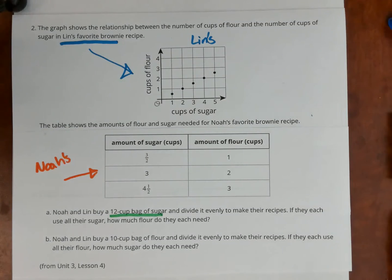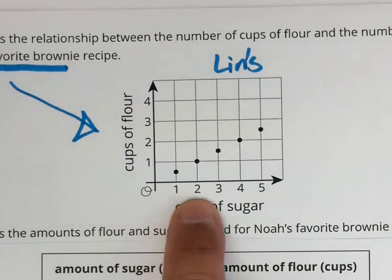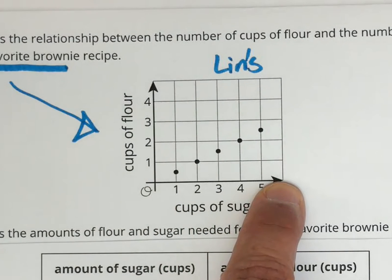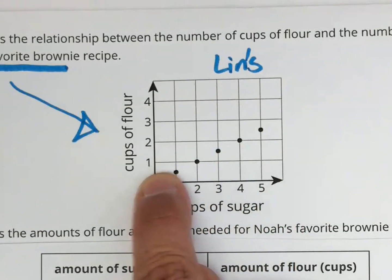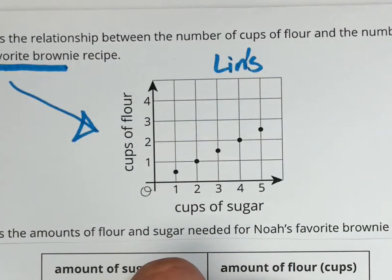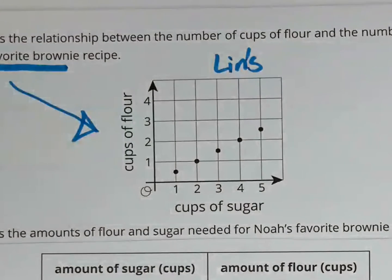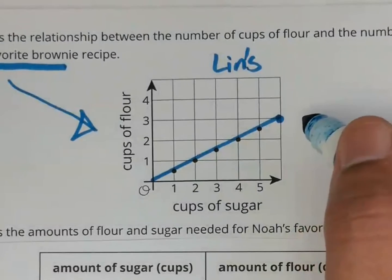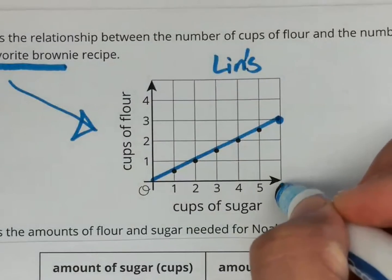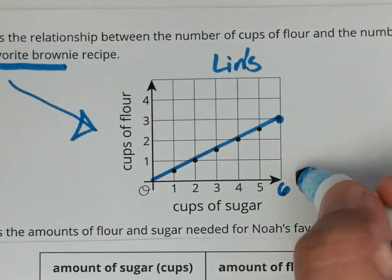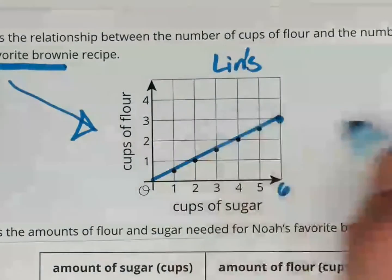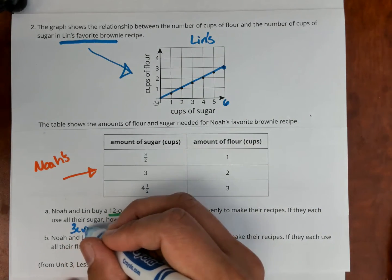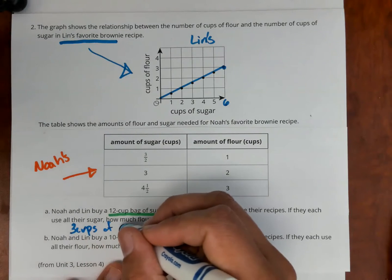Now for each of them, look here in Lynn's graph. This axis goes by ones, one, two, three, four, five. Where would the next one be here? That would be six. And you see how all these points all line up, you can use the graph to see where Lynn's cups of flour will be at six cups of sugar. So there's the line for Lynn's graph. And you see here, that's six cups of sugar. Where is that going to be? How many cups of flour? It's going to be right here for three cups of flour. So for Lynn, it's three cups of flour.